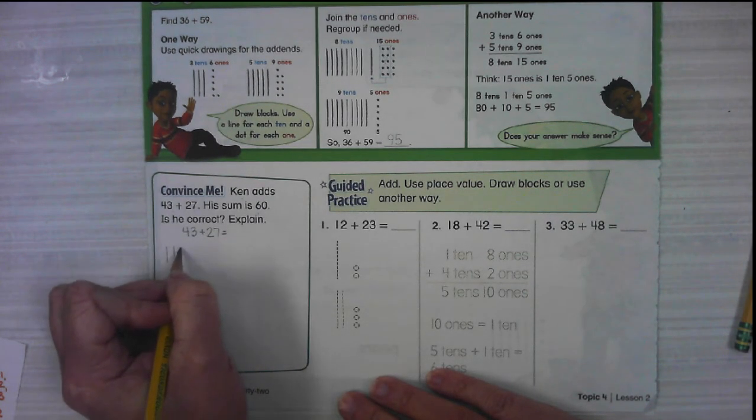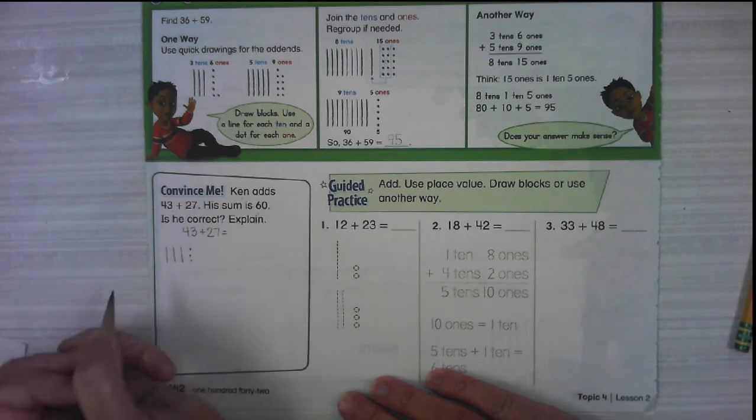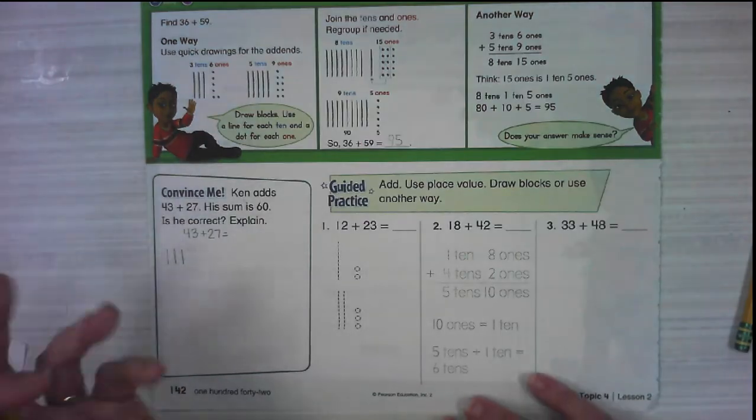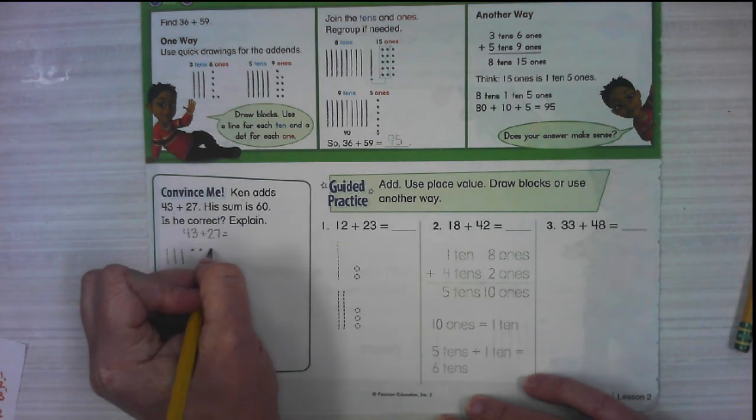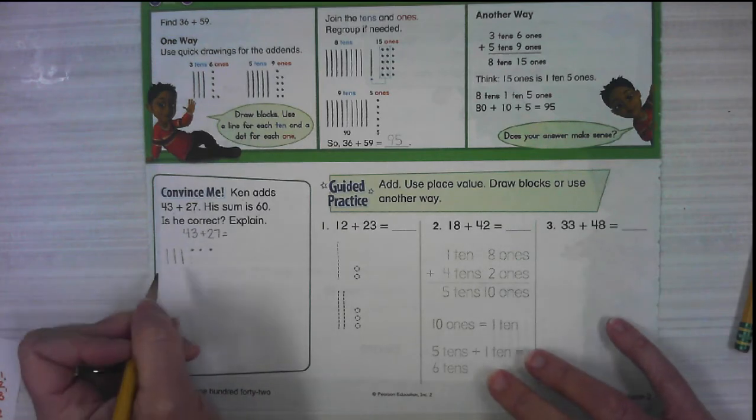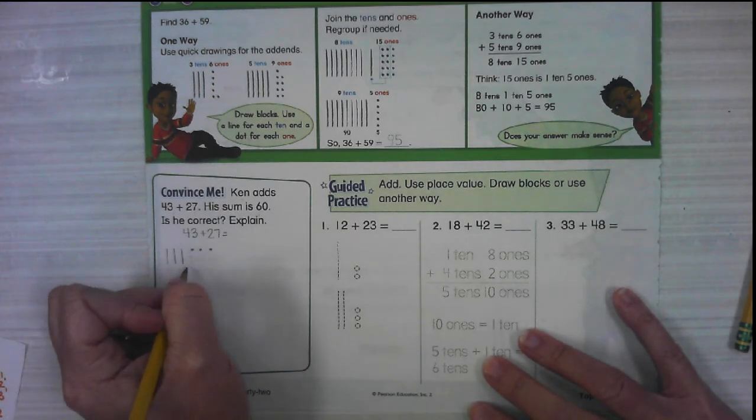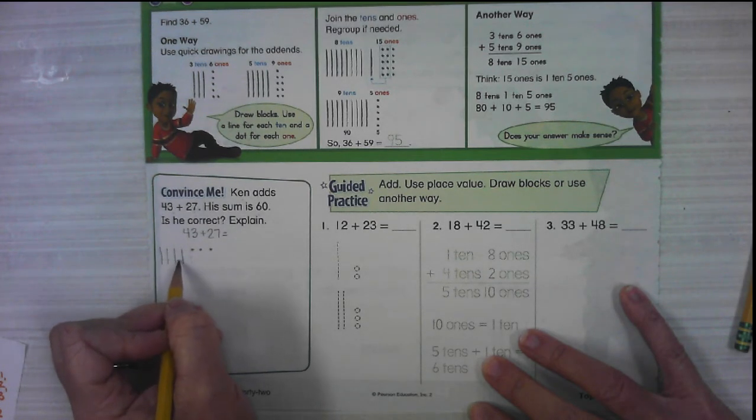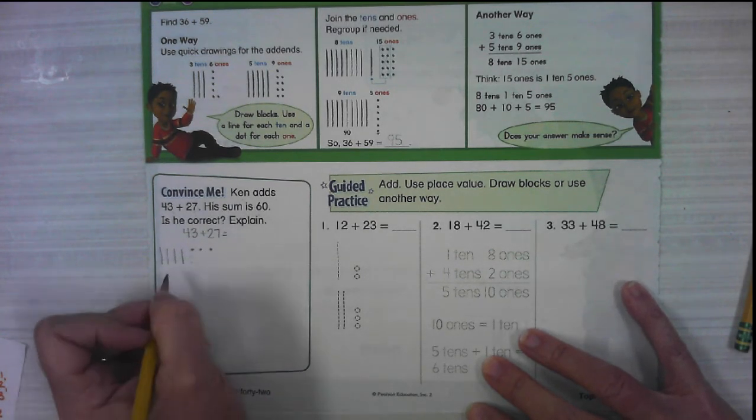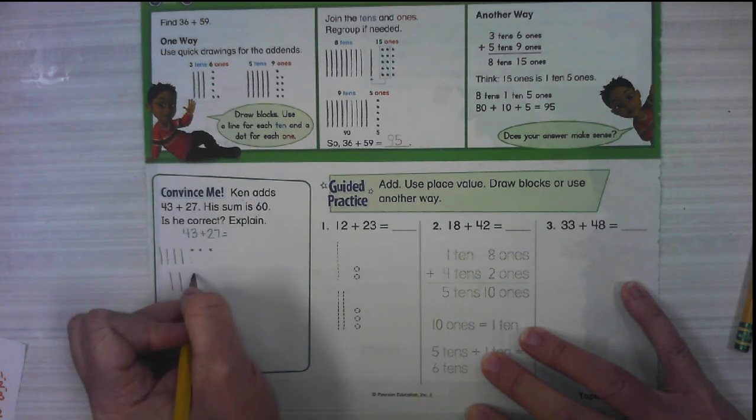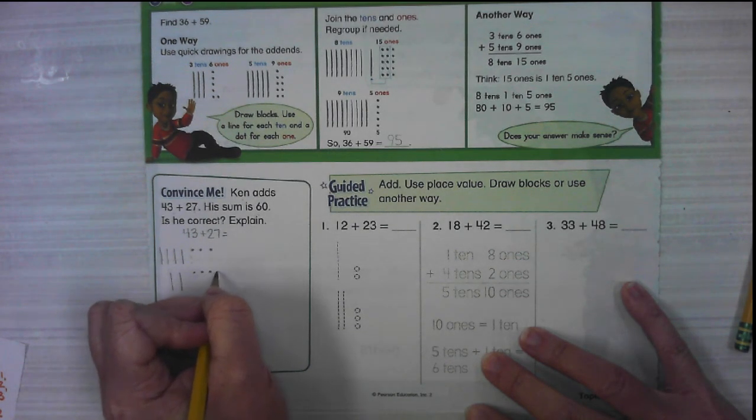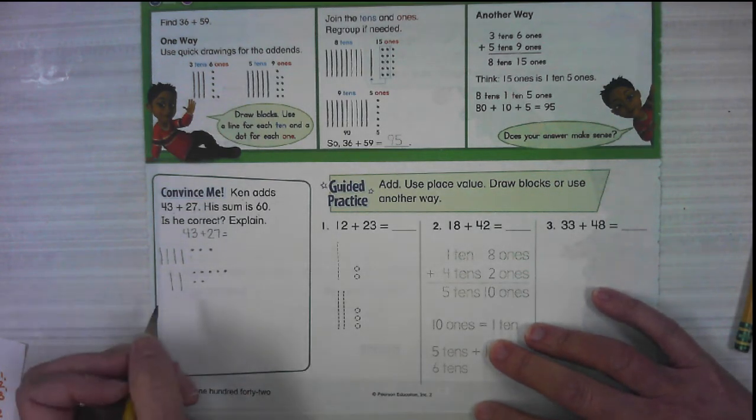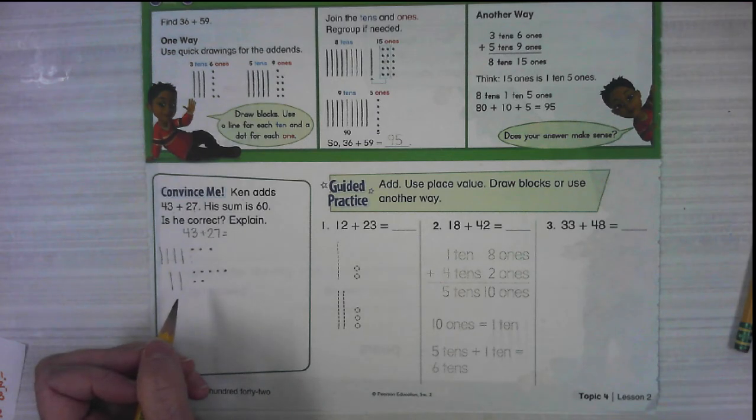43 plus 27. Four tens, three ones. That's three tens, three ones. There's four. Two tens and seven ones.